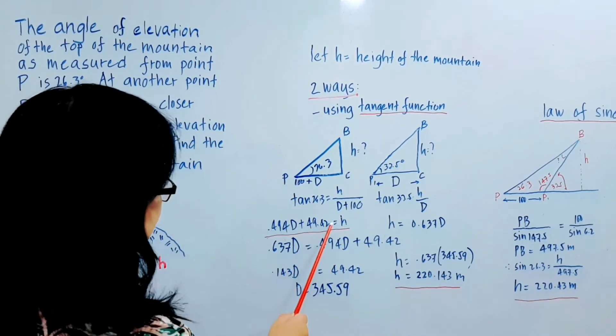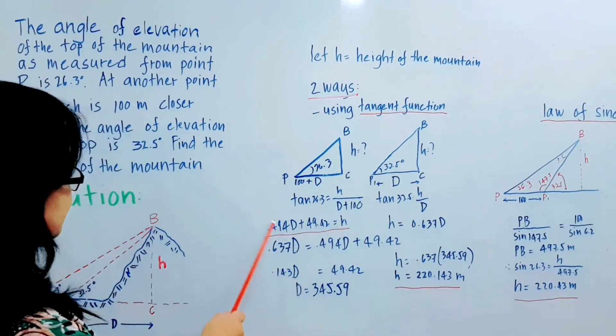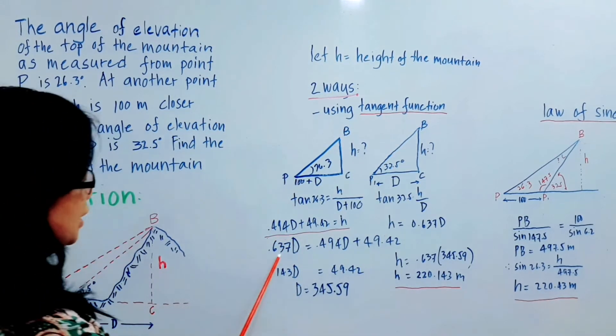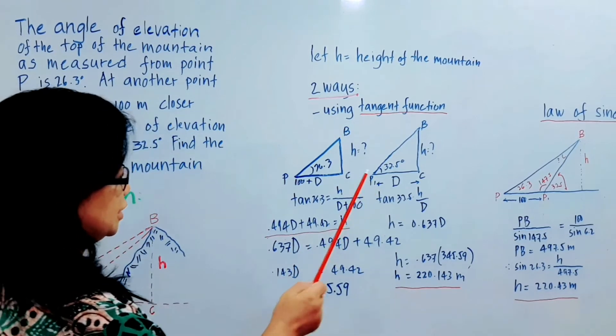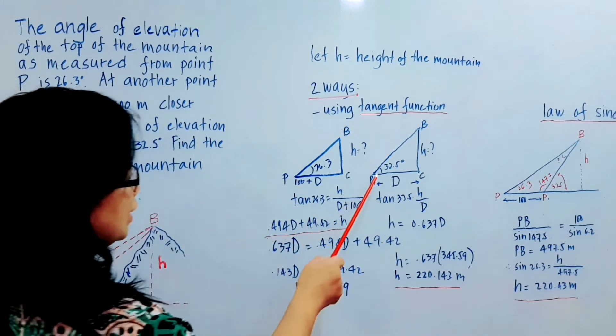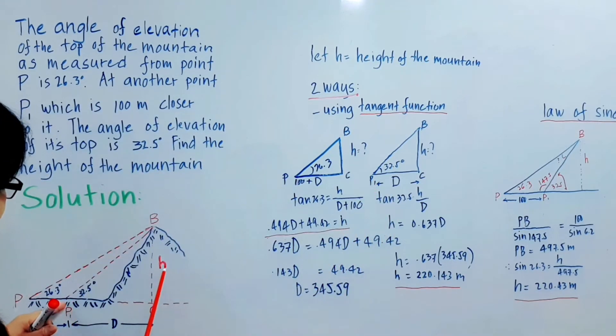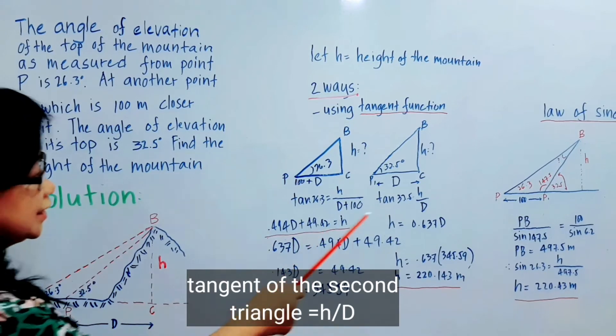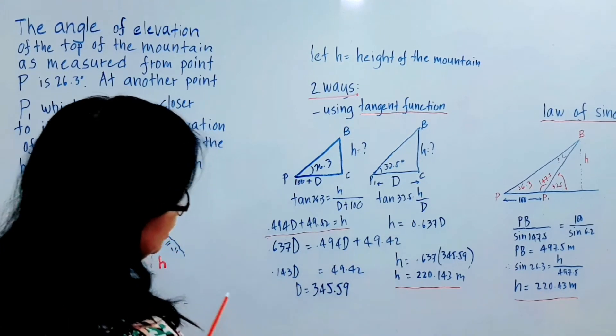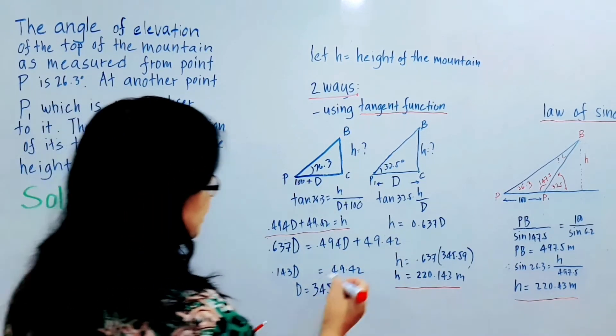This is our relationship between H and D. But what we're looking for is the height of the mountain, which is H. D is unknown also, so we need to find the value of D and H. Now, let's go to the other right triangle with an angle of 32.5 degrees. The tangent is H over D. Therefore, tangent 32.5 equals H over D, so H equals 0.637D.